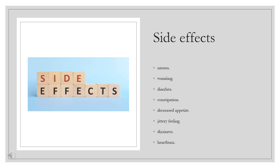Side effects. Some common side effects of Exenotide include: nausea, vomiting, diarrhea, constipation, decreased appetite, jittery feeling, dizziness, and heartburn.